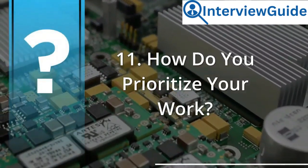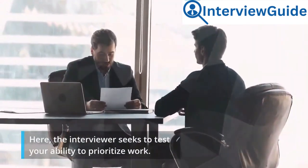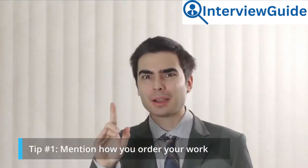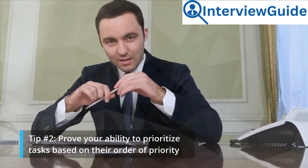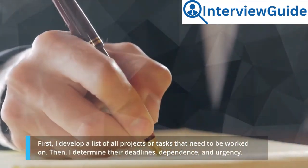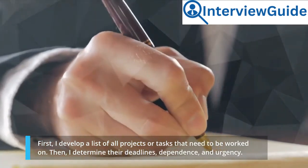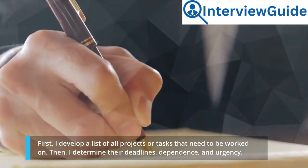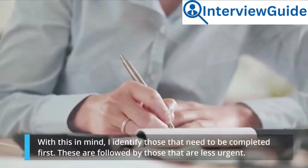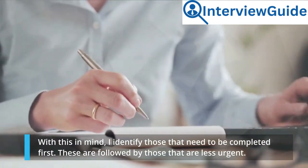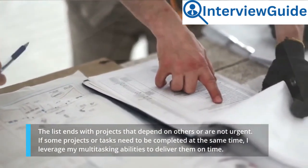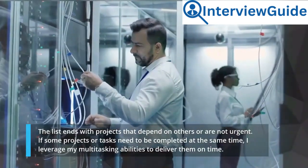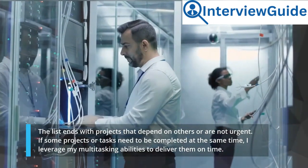Question 11: How do you prioritize your work? Here, the interviewer seeks to test your ability to prioritize work. Tip number 1: mention how you order your work. Tip number 2: prove your ability to prioritize tasks based on their order of priority. Sample answer: First, I develop a list of all projects or tasks that need to be worked on. Then, I determine their deadlines, dependence, and urgency. With this in mind, I identify those that need to be completed first. These are followed by those that are less urgent. The list ends with projects that depend on others or are not urgent. If some projects or tasks need to be completed at the same time, I leverage my multitasking abilities to deliver them on time.